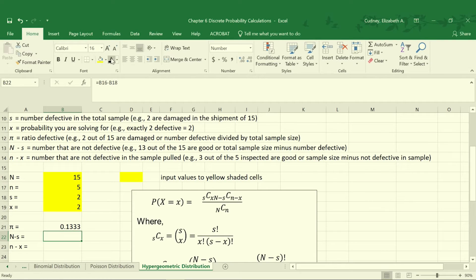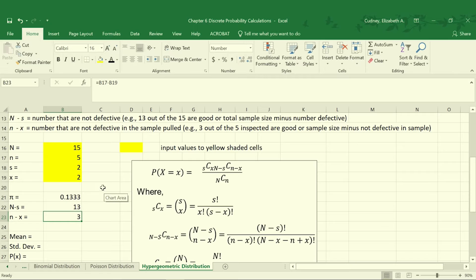N minus S is our B16 minus B18. And you'll see we'll use this in our calculations. So it's nice to have this as a step within our calculations already. And then our lowercase n minus X is B17 minus B19. Now we're going to go through and start using our calculations.